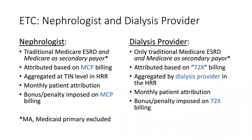For dialysis providers, similarly, only traditional Medicare ESRD and Medicare as secondary payer are included — MA and Medicaid primary are excluded. Patients are attributed based on 72X billing, the billing code for services rendered in the dialysis facility. Patients are aggregated by dialysis provider within the HRR, so different dialysis providers are held to their own benchmarks and not aggregated across the entire HRR. Monthly patient attribution applies, just as with nephrologists. Bonuses and penalties are imposed on 72X billing for dialysis providers.